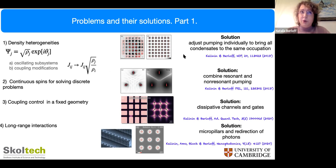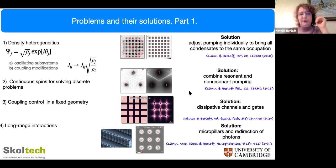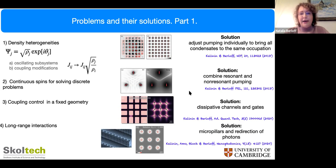In systems like the coherent Ising machine where you cannot freely adjust coupling independently — for example, using the pump for projection in a degenerate OPO scheme — we have continuous spins, but we'd ideally like to solve discrete problems. We propose combining resonant and non-resonant pumping to project the spins at the moment the condensates are created, allowing the system to minimize the Ising Hamiltonian rather than just the XY model.